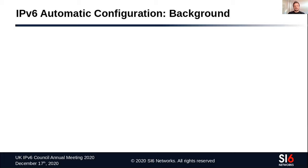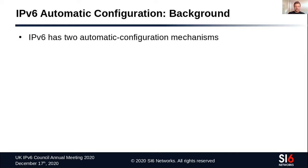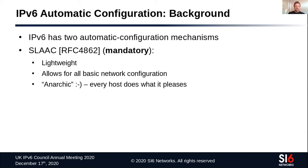Let's start with IPv6 automatic configuration. IPv6 has two different mechanisms for automatic configuration: one is SLAAC, the other is DHCPv6. SLAAC is mandatory, specified in RFC 4862. It's supposed to be lightweight — if you need simple network configuration, SLAAC should be able to provide for all that basic configuration. One aspect of SLAAC that is not so popular in enterprise environments is that it's kind of like anarchy for automatic configuration, in the sense that essentially every host does what it pleases.